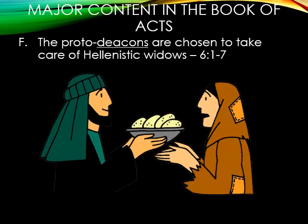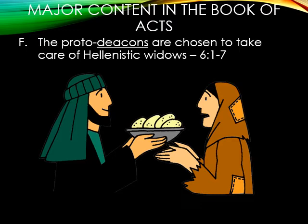Letter F: the proto-deacons are chosen to take care of Hellenistic widows. Proto means 'first' — these are the first deacons, the model from which we get the office of a deacon in church today. In Acts chapter 6, the number of disciples had greatly multiplied and some Grecians were upset because the Hebrews were neglecting their widows in the daily ministry. Instead of getting defensive, the twelve got together to reason a solution. They decided to let those Grecians pick out from amongst themselves seven men who were full of the Holy Spirit and wisdom and had a great reputation. Seven Grecians were chosen, and one in particular was named Stephen.